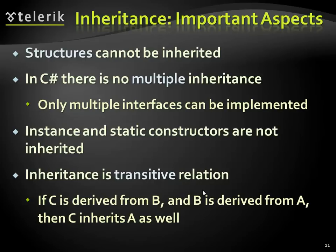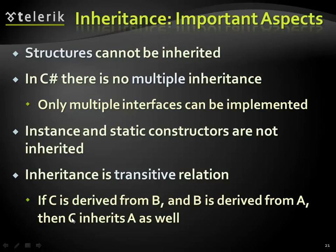Structures are not inheritable — they basically behave like classes although their memory management differs, but in functional programming they are used as if they are classes. There is no multiple inheritance in C# — you can inherit only one class. Inheritance is also transitive: if C is derived from B and B is derived from A, then C is derived from A as well — whatever is inherited from A will also be available at the bottom layer.